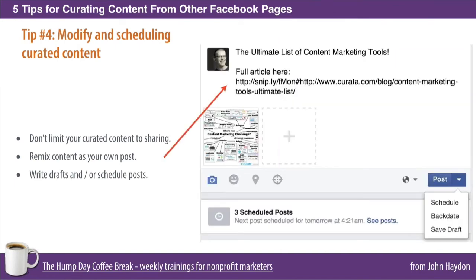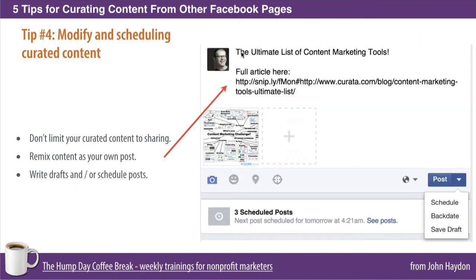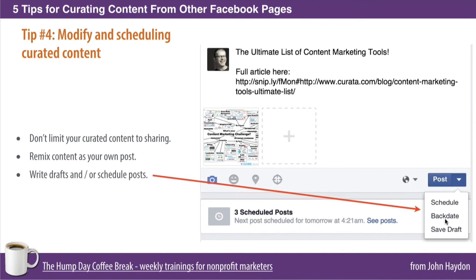The next step is to do a little bit of research — visit that original article or piece of content that the page is sharing. Read the article, grab an image from it. In this example, I've gone to the article they shared — the ultimate list of content marketing tools — changed the title a little bit, added the link, and I'm sharing a massive mind map that was inside the article as a photo. On top of that, I can schedule the post, save it as a draft, or backdate it — and all of that goes into my posts menu on my Facebook page.